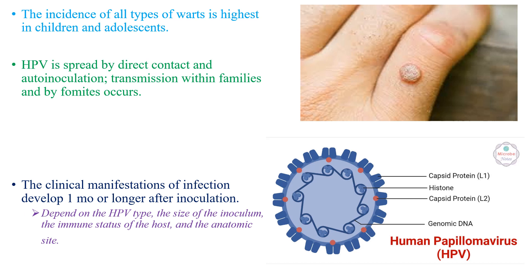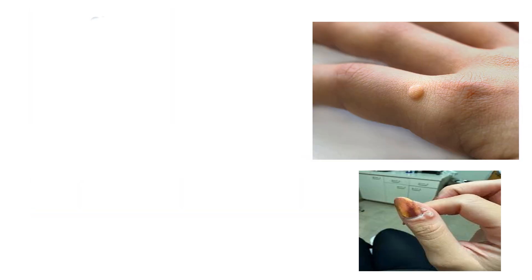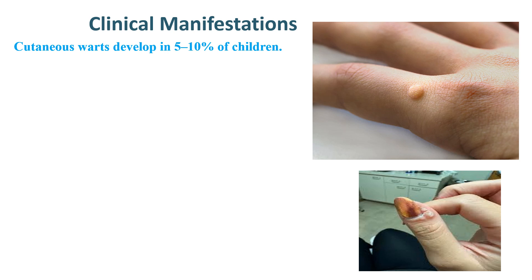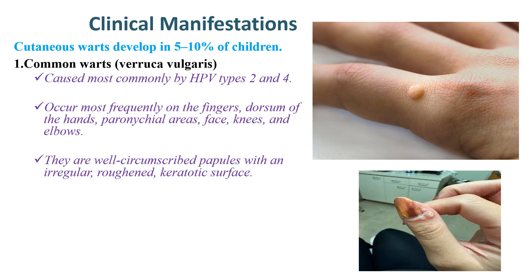The clinical manifestations of infection develop one month or longer after inoculation. This depends on the type of human papillomavirus, the size of the inoculum, the immune status of the host, and the anatomic site. There are different types of warts.